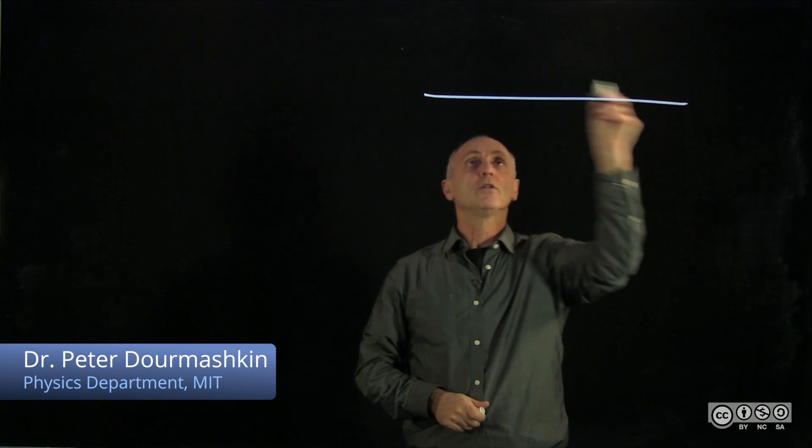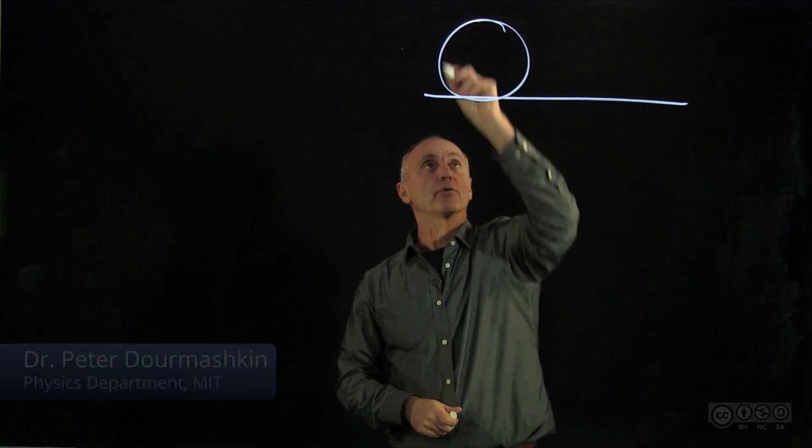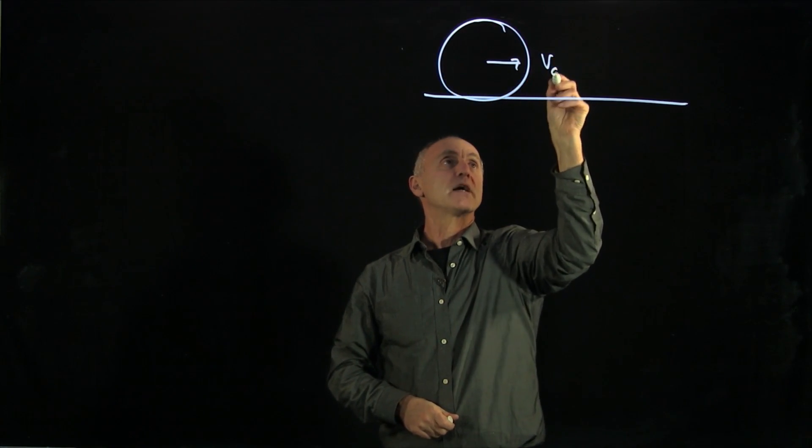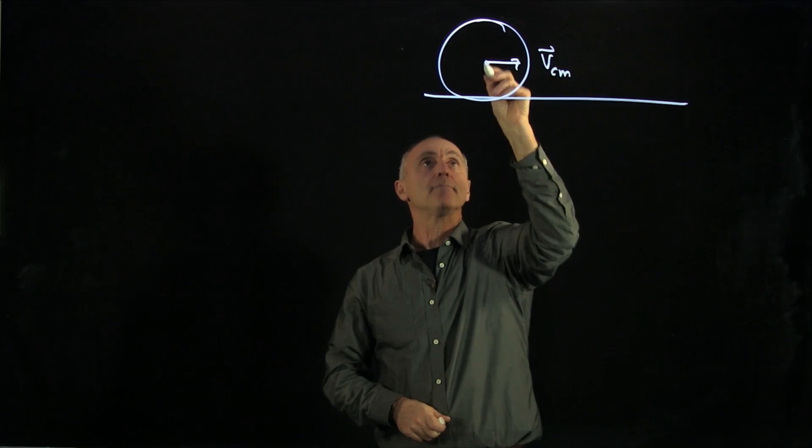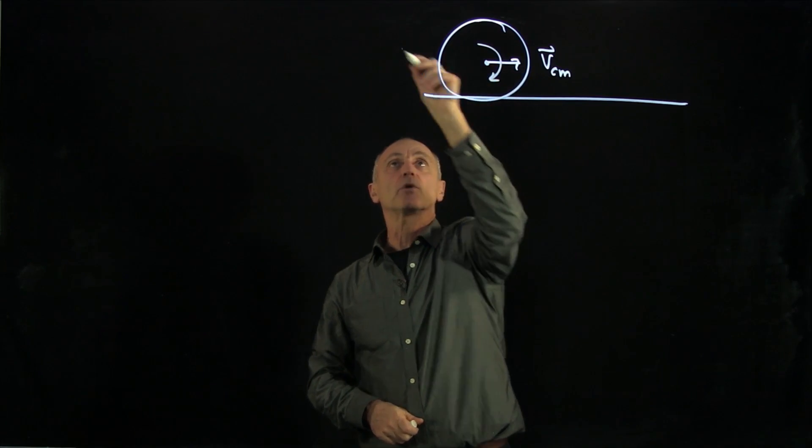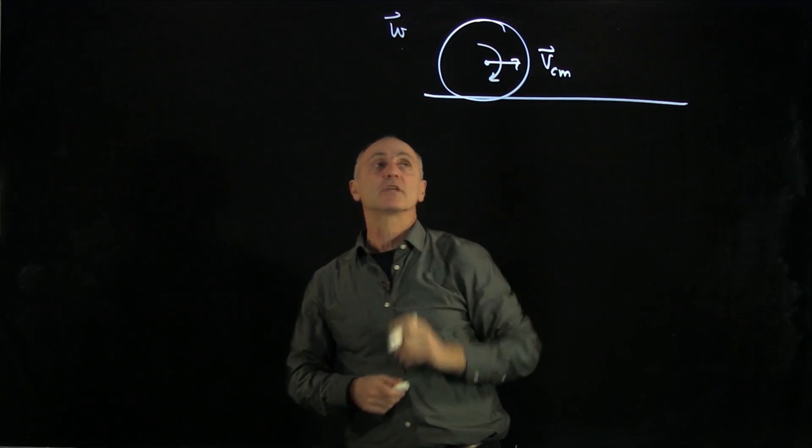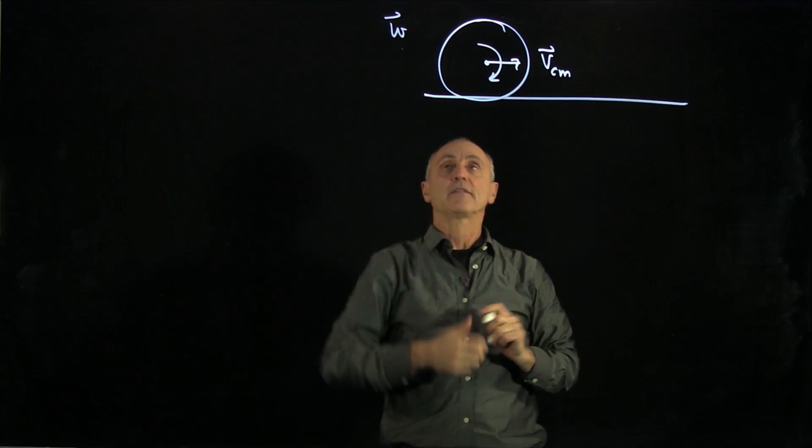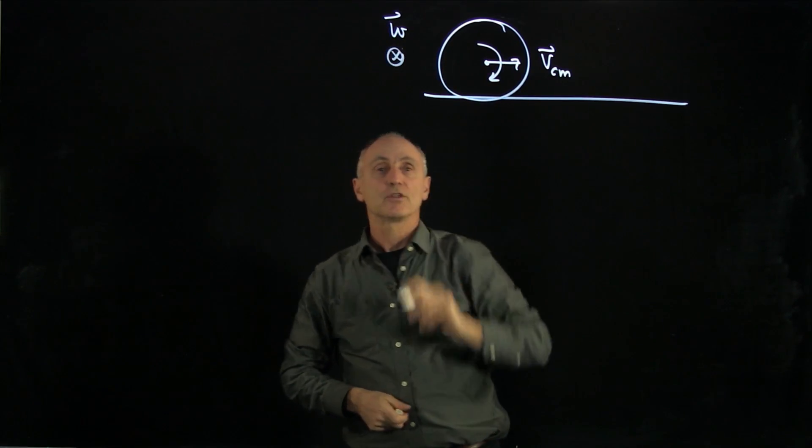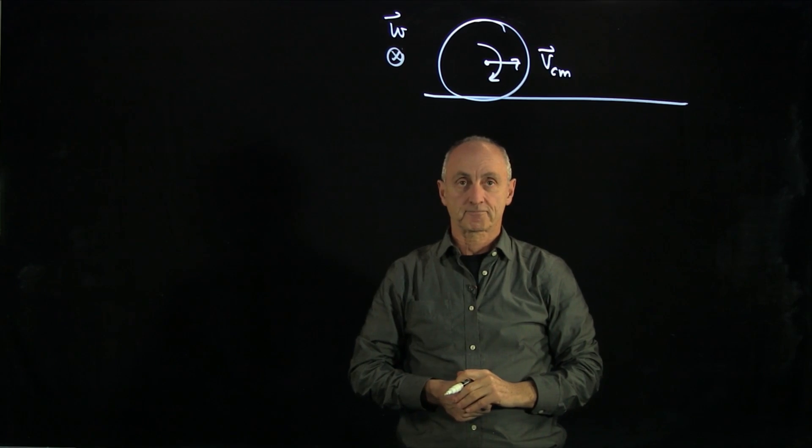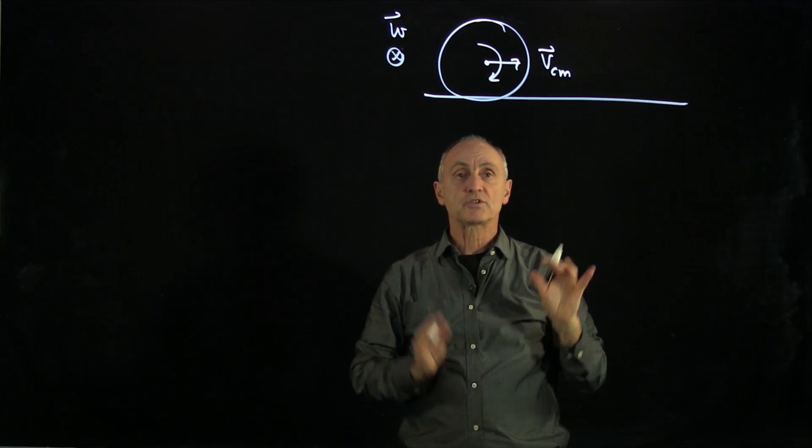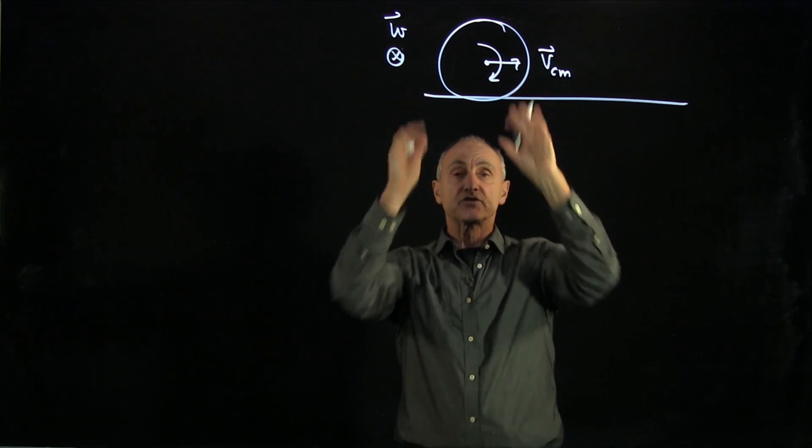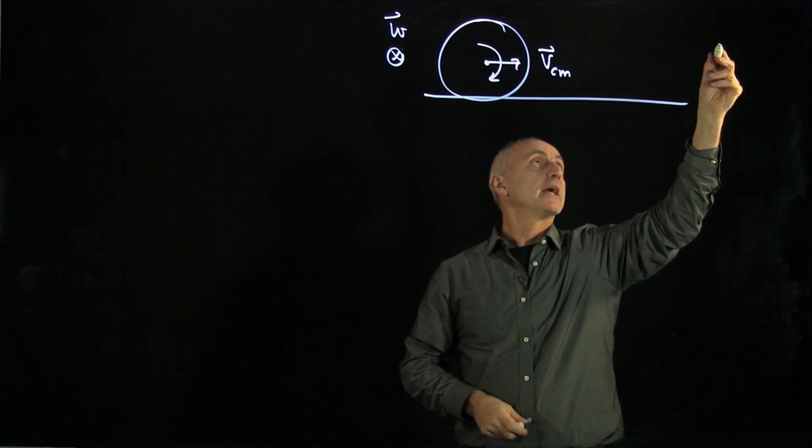Let's consider the motion of a wheel that's rolling along the ground with some center of mass velocity vcm. And because the wheel is rotating, it has an angular velocity. You can see that vector is directed into the plane of the board. Now, what we'd like to do is consider the kinetic energy of this continuous body.